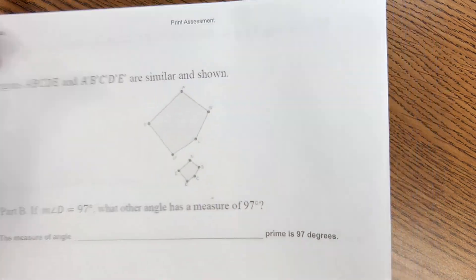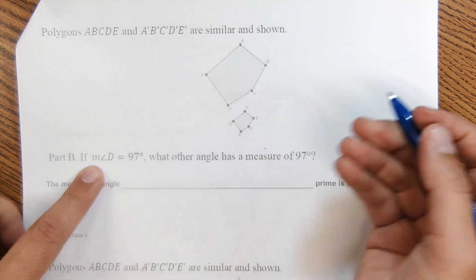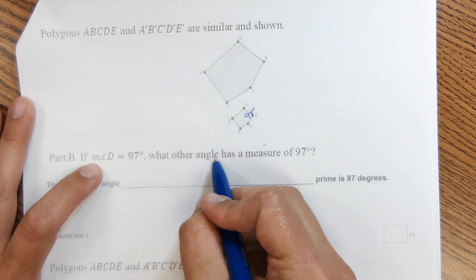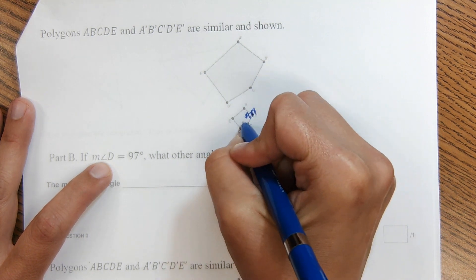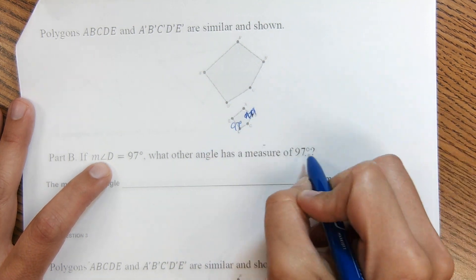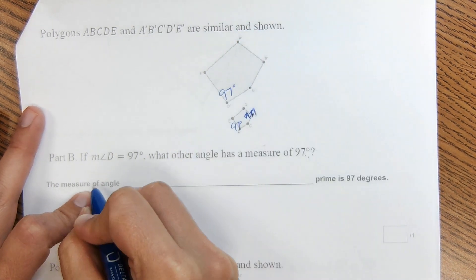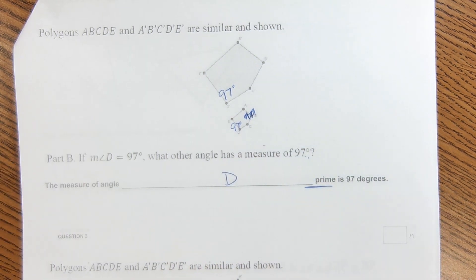Next one, similar scenario, similar shapes. Measure of angle D is 97 degrees. What other angle has a measure of 97 degrees? Oh, I labeled B instead of D. 97 degrees. What other angle has a measure of 97? It would be D prime. So the measure of, it says prime right here suggests D prime is 97 degrees.